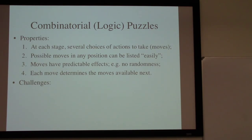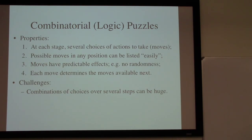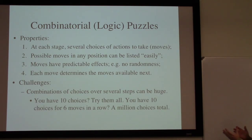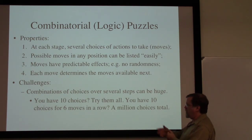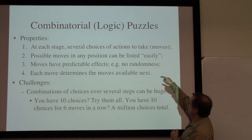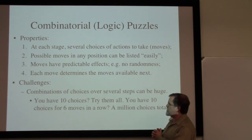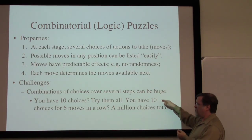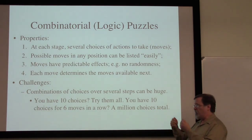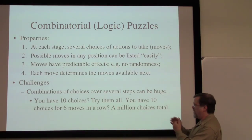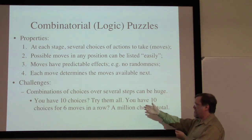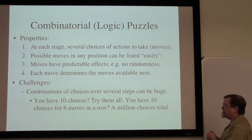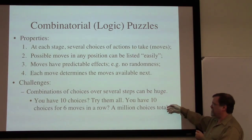There are certain challenges in these puzzles. One is that the combinations of choices over several steps can be pretty huge. If I have 10 choices of what I might do, we can just try them all. But if we have 10 choices for each move and a goal that's going to take six moves to accomplish, well, 10 choices six times in a row is a million choices — 10 to the power of six. That's not something we can just think our way through.